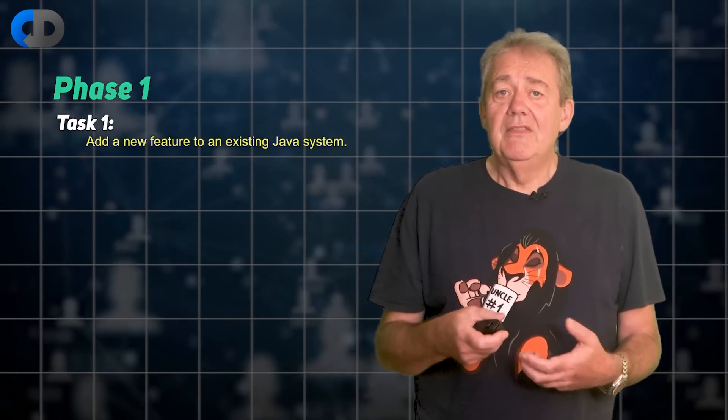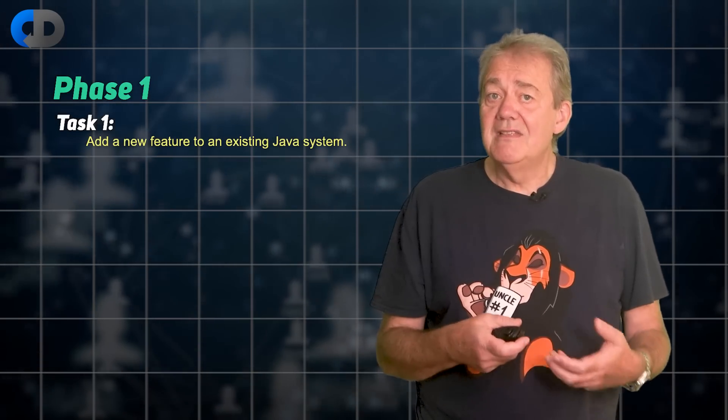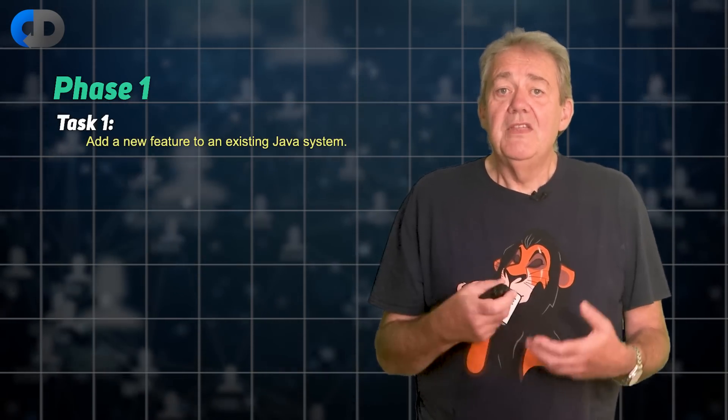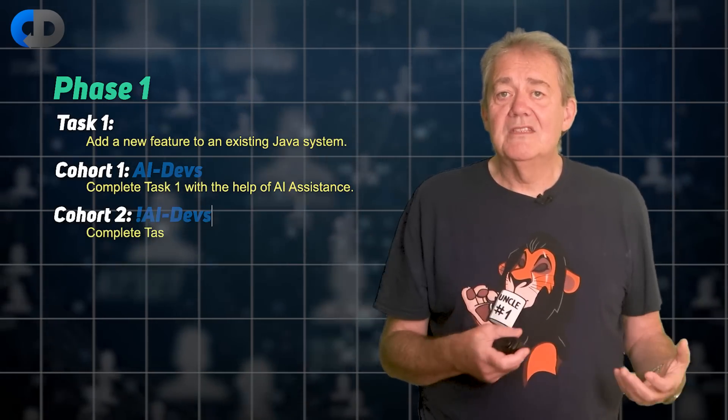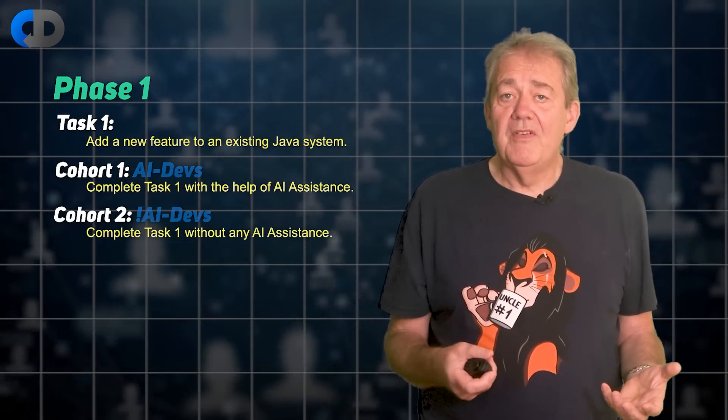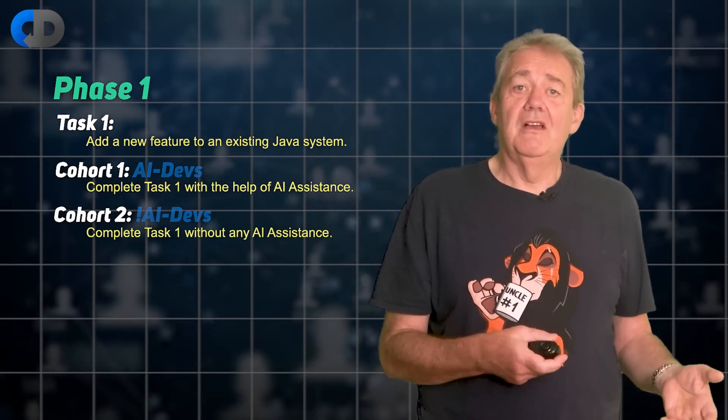We start with some tricky, poor, buggy code. And the subjects of the experiment are then tasked with modifying it. These subjects, hopefully you, are formed into two groups. One group is asked to complete the task with the help of AI code assistants and the other without.